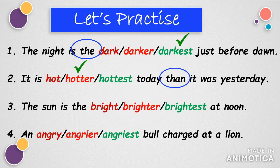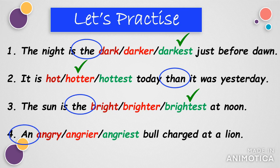'The sun is the ___ (bright/brighter/brightest) at noon.' Here we find the article 'the' before the adjective so we should use the superlative form — the answer is 'brightest'. 'An ___ (angry/angrier/angriest) bull charged at a lion.' Here we find the article 'an' and hence we should use the positive degree — the answer is 'angry'.